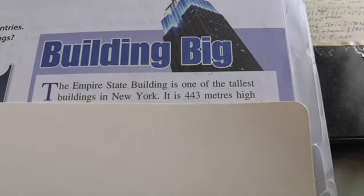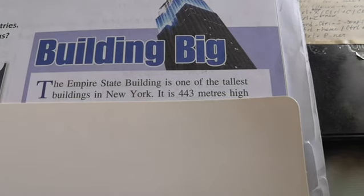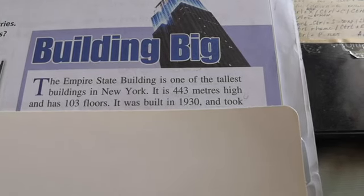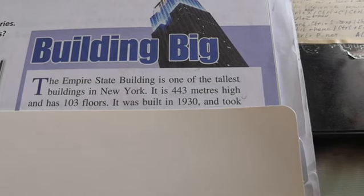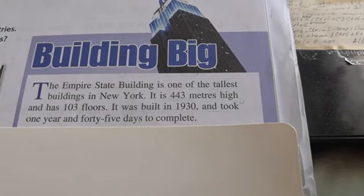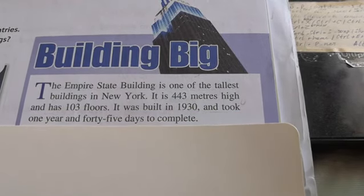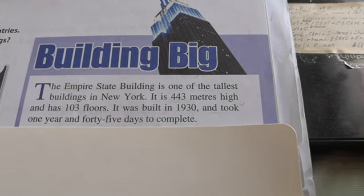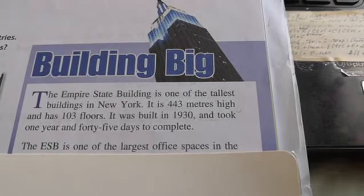Building Big. The Empire State Building is one of the tallest buildings in New York. It is four hundred and forty-three meters high and has one hundred and three floors. It was built in nineteen thirty and took one year and forty-five days to complete.